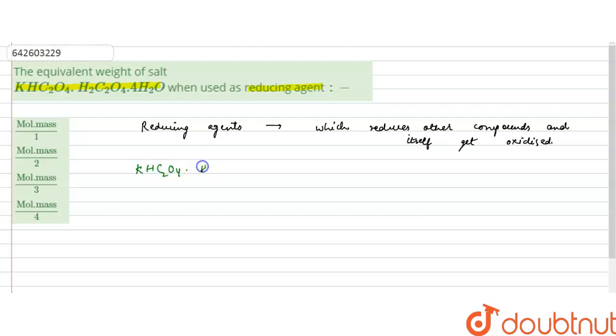So we will see KHC₂O₄·HC₂O₄·4H₂O when it acts as reducing agent. It will form CO₂ plus K₂CO₃ plus H₂O.